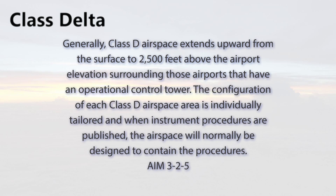Class D airspace. As stated in the AIM, Chapter 3-2-5, generally, Class D airspace extends upward from the surface up to 2,500 feet above the airport elevation, surrounding those airports that have an operational control tower. The configuration of each Class D airspace is individually tailored, and when instrument procedures are published, the airspace will normally be designed to contain these procedures.